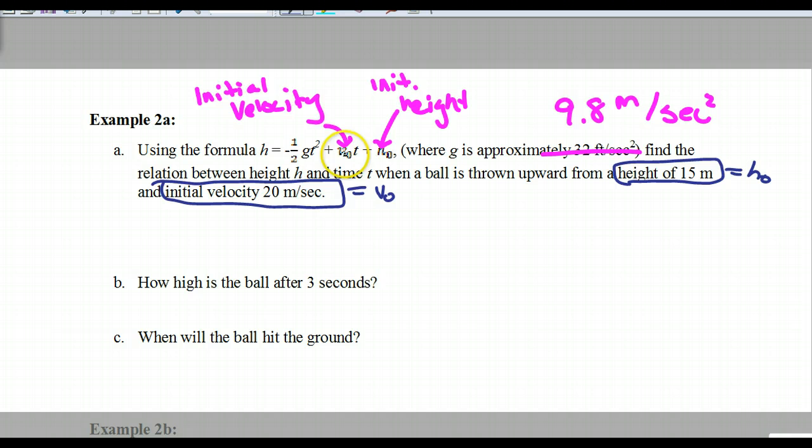We're going to use this particular one. Note that v sub zero is initial velocity, h sub zero is initial height. In this problem, it says the ball is thrown upward from a height of 15 meters. That's our h naught. And our initial velocity is 20 meters per second. That's our v naught. So I'm just going to replace the g, the v naught, and the h naught in the equation.